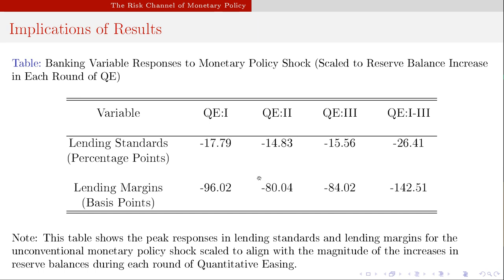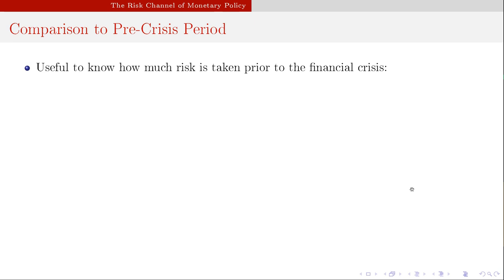If I scale the maximum responses consistent with the size of QE asset purchases, the first round of QE had the largest impact on lending standards and lending margins — about an 18 percentage point reduction in lending standards and nearly a full percentage point reduction in lending margins. Aggregating across all three rounds of QE, there's about a 26 percentage point reduction in lending standards on average and a nearly 1.5 percent reduction in lending margins — so margins would fall from 10 down to about 8.5 percent. There's still a compression in lending margins.